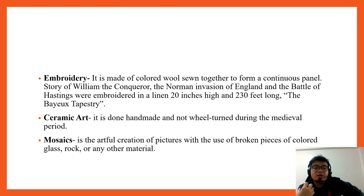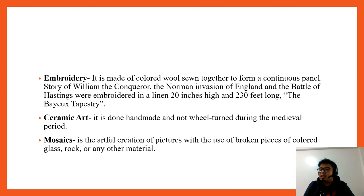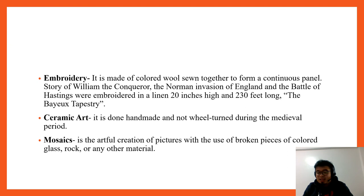Mosaics: similar to stained glass, mosaics are not full paintings on a panel. They are made from pieces of glass joined together to form an image. Stained glass is not simply painted on a window — it is made of fragmented pieces of glass assembled together, and mosaics similarly present an image through assembled pieces.